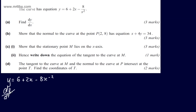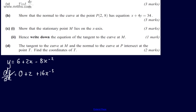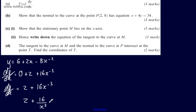Differentiating both sides with respect to x: the constant 6 gives 0, differentiating 2x gives 2, and differentiating minus 8x to the minus 2 — we multiply down by the power and drop the power by 1. So dy by dx equals 2 + 16x to the minus 3. You could also write this as 2 + 16 over x cubed. Either form would get the three marks.